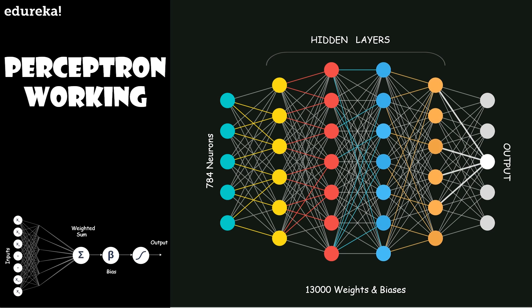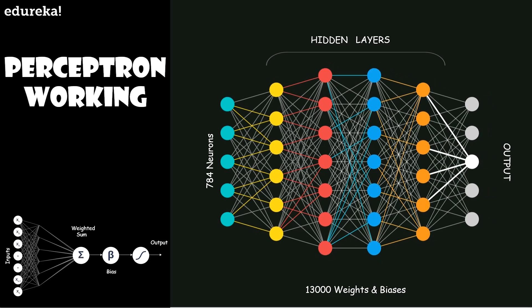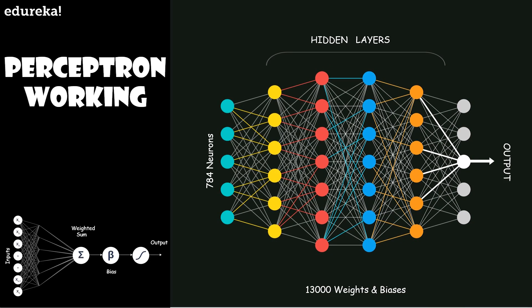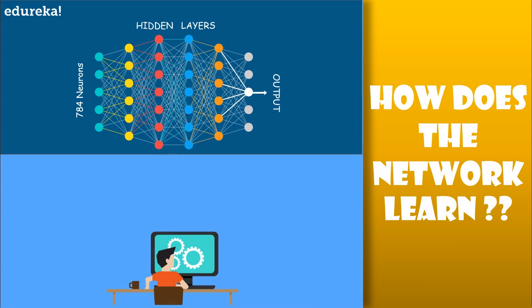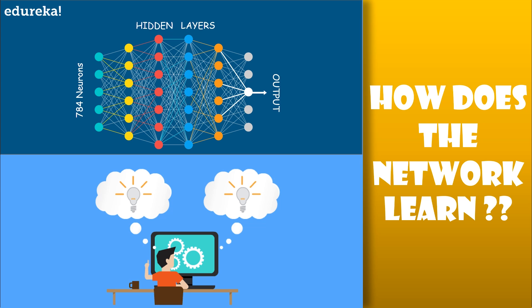Given that somewhat arbitrary choice of two hidden layers with 16 neurons, the network has about 13,000 weights and biases that we can adjust. These values determine what exactly the network actually does. What we want is an algorithm where you can show this network a series of training data, which comes in the form of different images of handwritten digits along with labels for what they are supposed to be, and it will adjust those 13,000 weights and biases so as to improve its performance on the training data. Hopefully this layer structure will mean that what it learns generalizes to images beyond that training data as well.